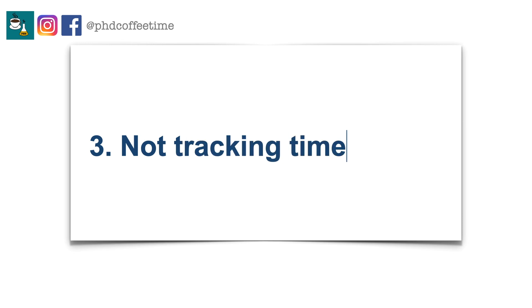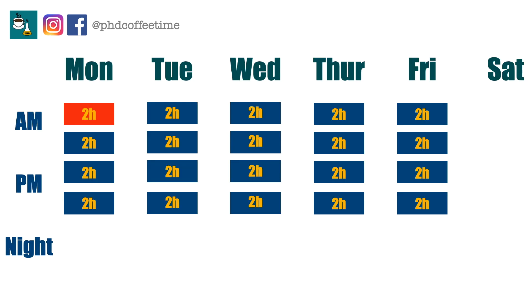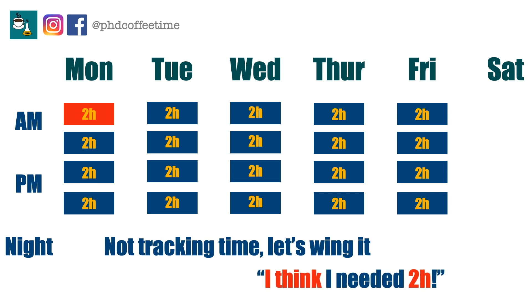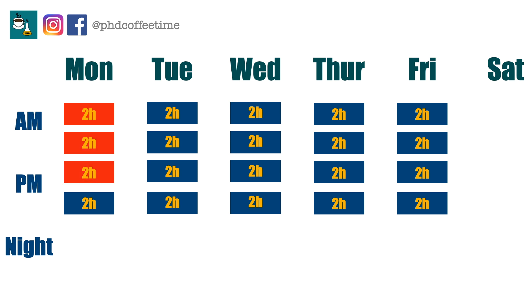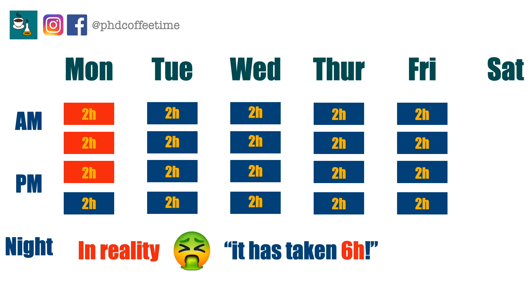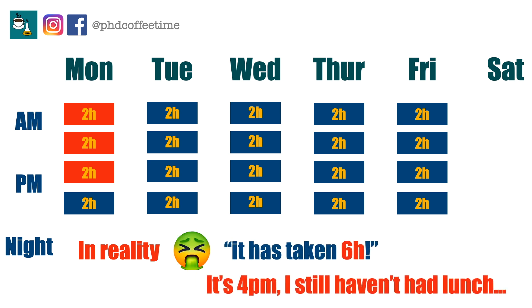The third mistake is you have no idea how much time things will take. There's a famous last phrase in the lab: 'I just need two hours.' If you haven't tracked your time and just wing it every time you go to the lab, with no clue how long things take, in the end you might have to push through six hours of work.